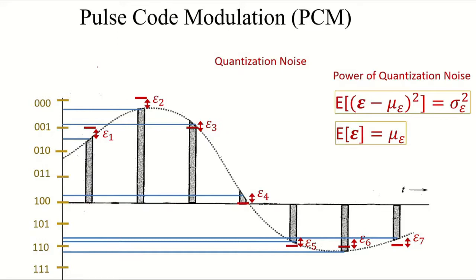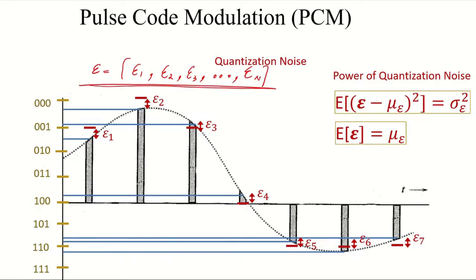By combining the quantization errors from all samples we obtain a quantization noise signal. If we have N samples, this discrete noise signal can be defined as a vector, and we calculate the power of this noise signal by calculating its variance: subtract the mean, square all samples, then average them. The variance of this signal represents the power of the quantization noise signal, and this quantization noise can cause significant performance degradation. Therefore we should appropriately design the number of quantization levels to achieve acceptable quantization noise power.